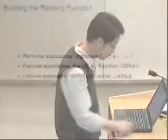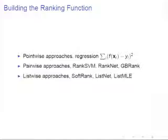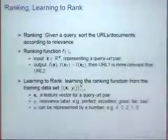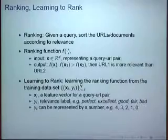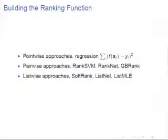One way to build the ranking function is pointwise: minimize a regression loss so that perfectly relevant URLs output four and irrelevant ones output zero. This can work sometimes. Another approach is pairwise — methods like Rank SVM, RankNet, and GBRank minimize contradicting pairs. People have also proposed listwise approaches such as SoftRank and ListNet. These are the existing approaches.